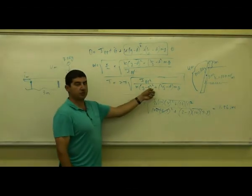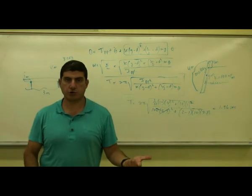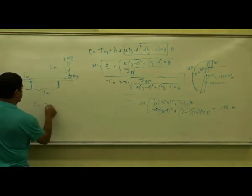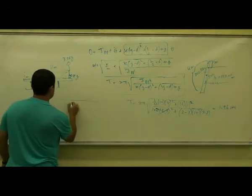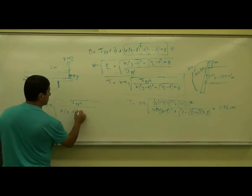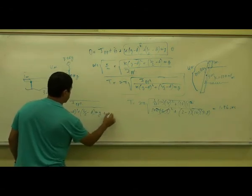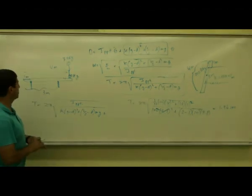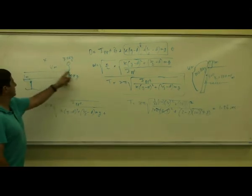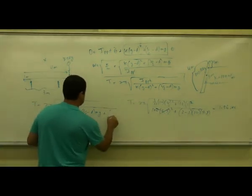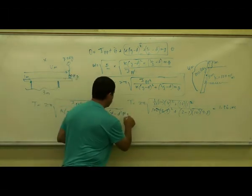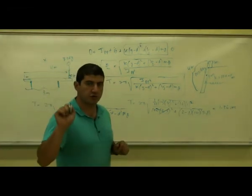The child adds their own torque to the system. We add a factor to the denominator of the period formula: 2π times the square root of I about the pivot divided by k·(y - d)² plus (L/2 - d)·m_rod·g plus the torque due to the kid. The torque due to the kid is their distance from the pivot (x - d) times their mass times g.